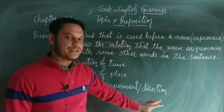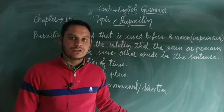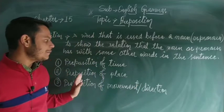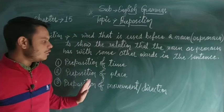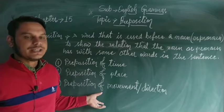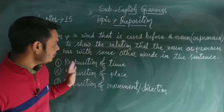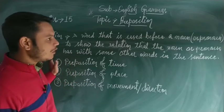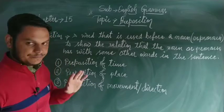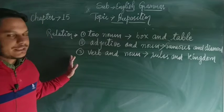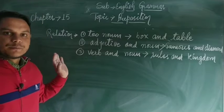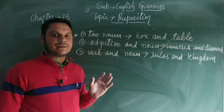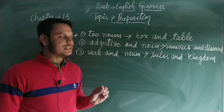Similarly, preposition of place — where, away, out, outside, inside — these are prepositions of place. And third is preposition of movement. Now we will know about all these in detail.